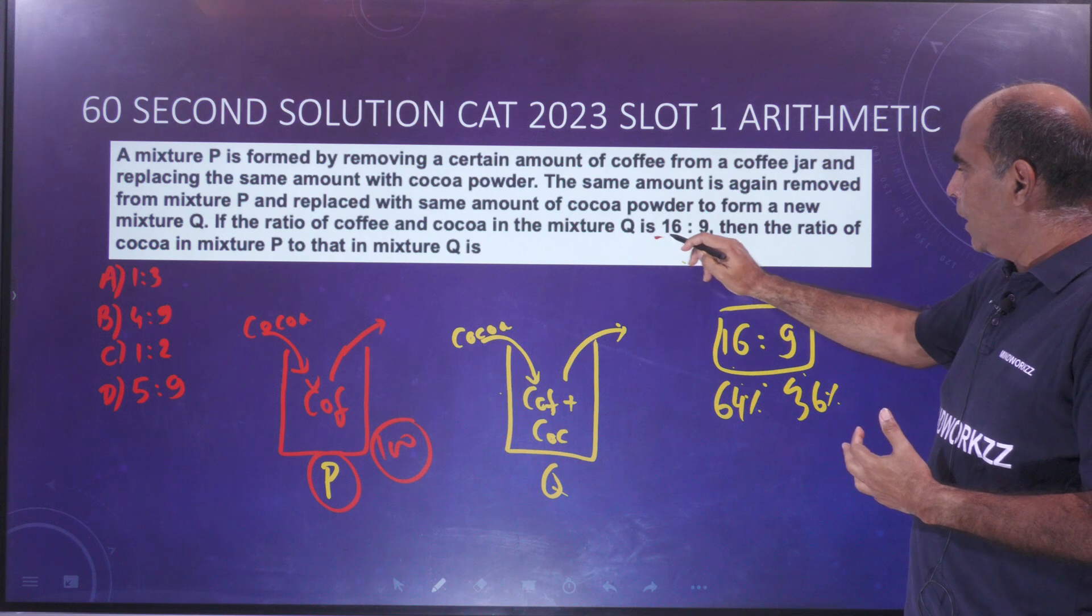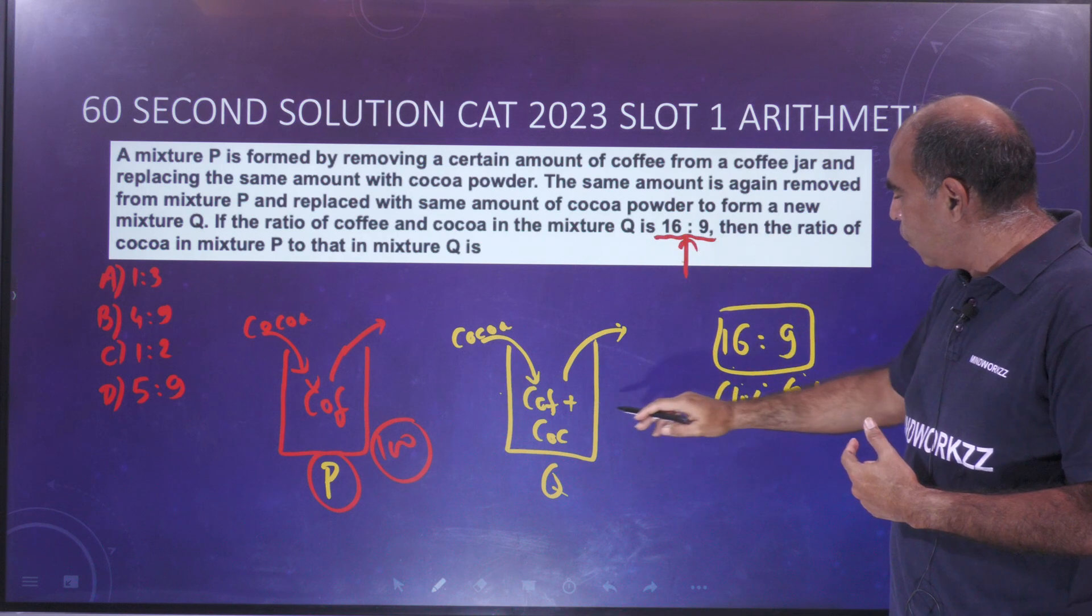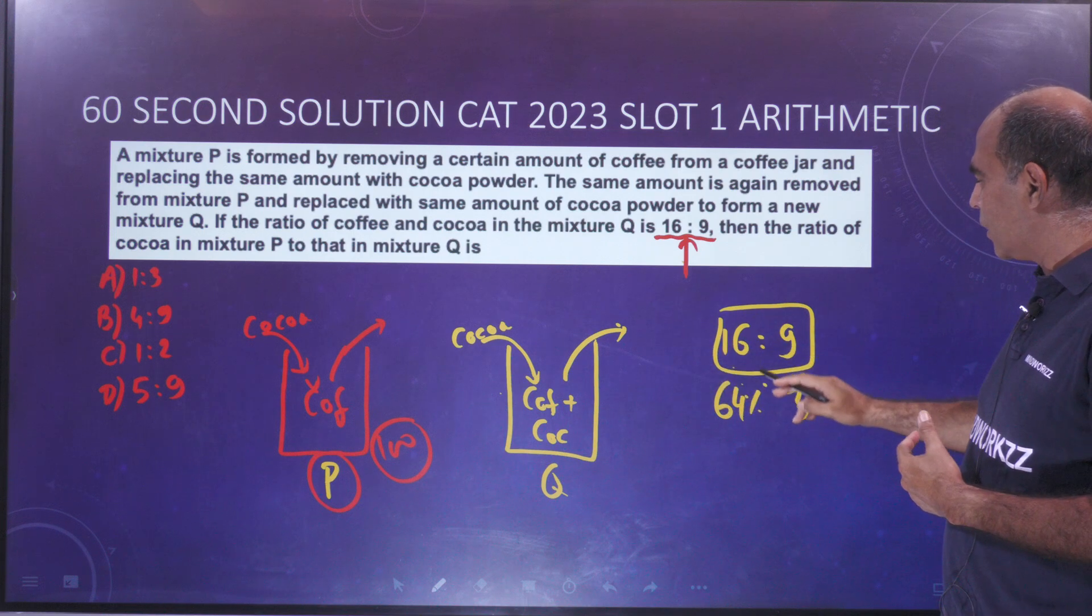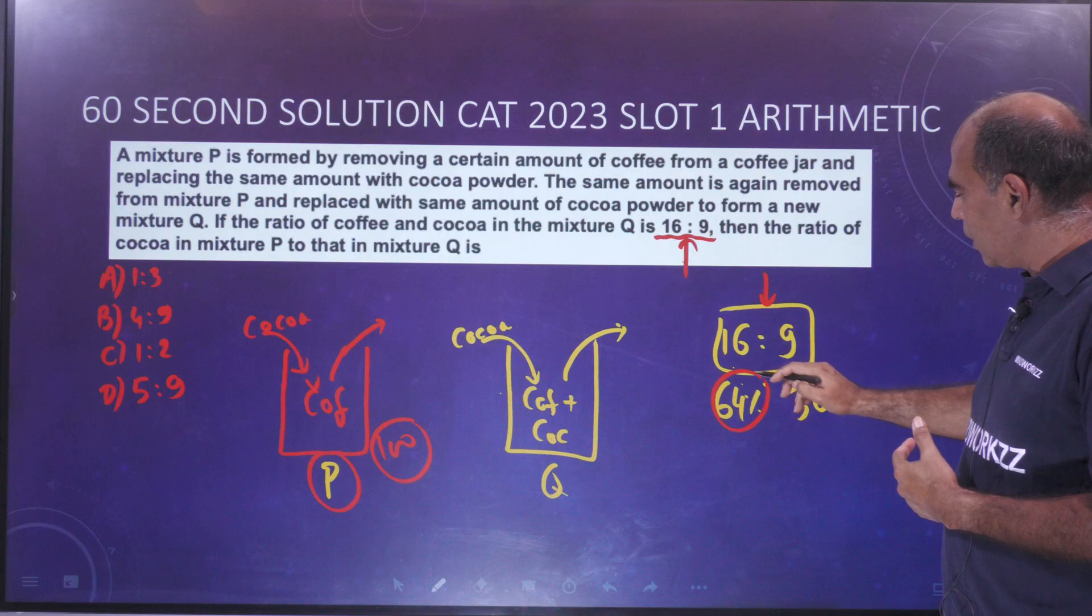This is where the trigger in this question is. The question says the coffee cocoa mixture after the second iteration is 16 to 9. What you perceive from here is that this must be 64% coffee and 36% cocoa.